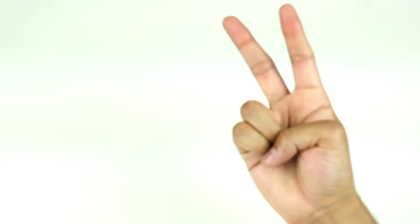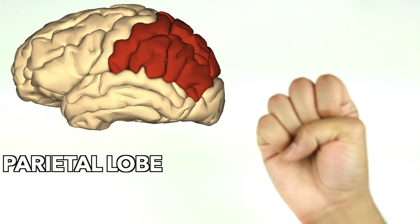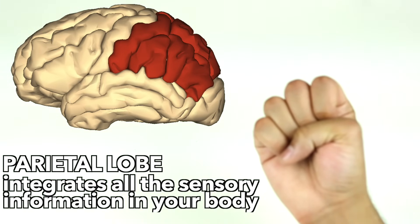If you extend your index and middle finger, you'll see the part of your hand that represents the parietal lobe. The parietal lobe integrates all the sensory information in your body. Your sense of space, navigation, and touch all get relayed here.